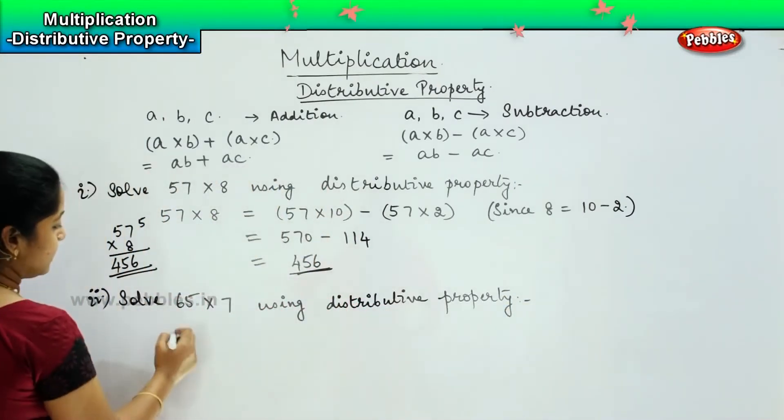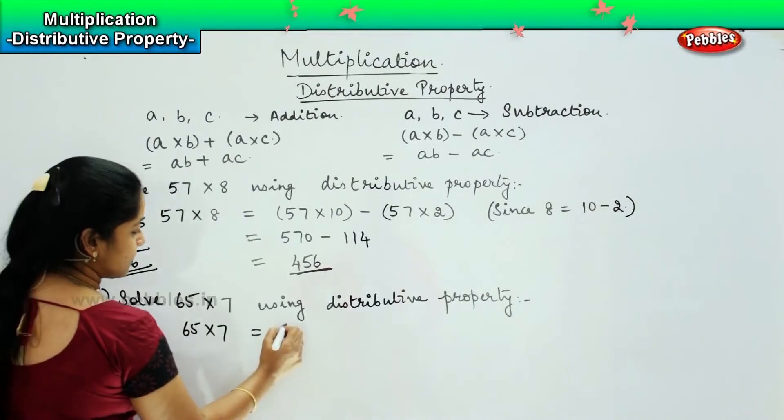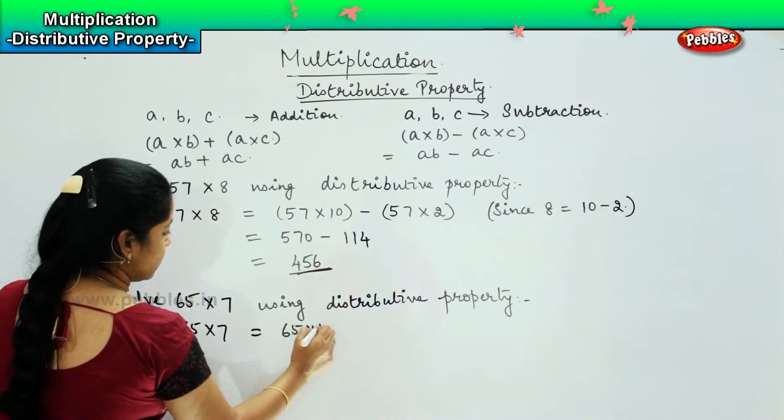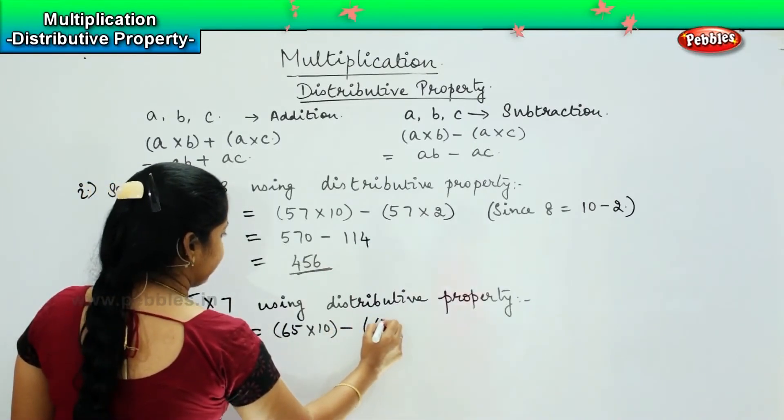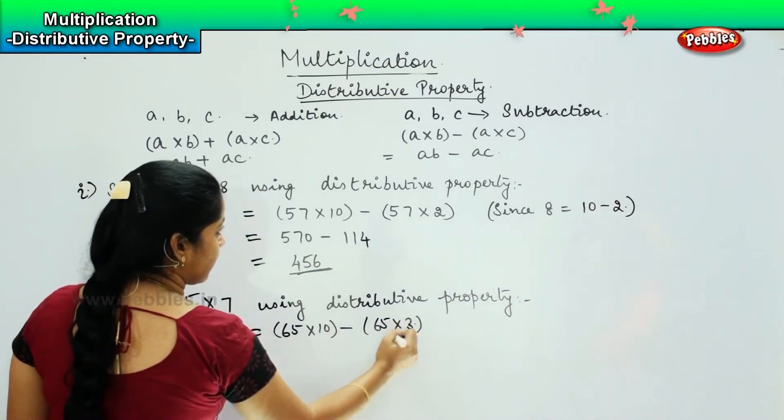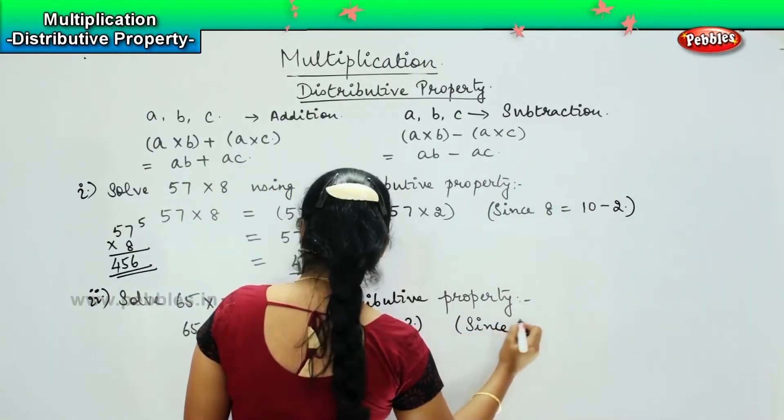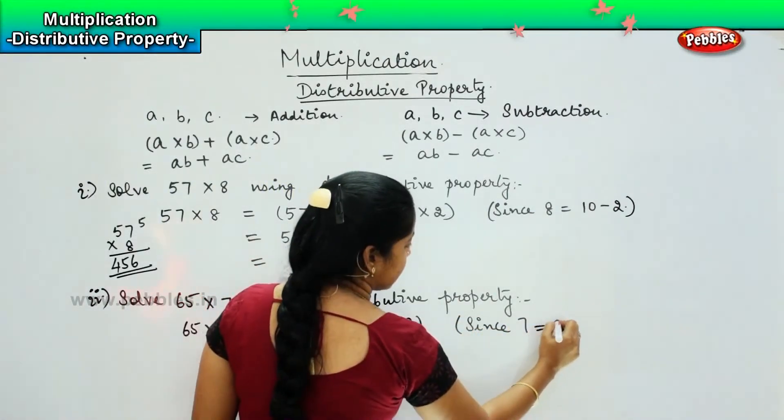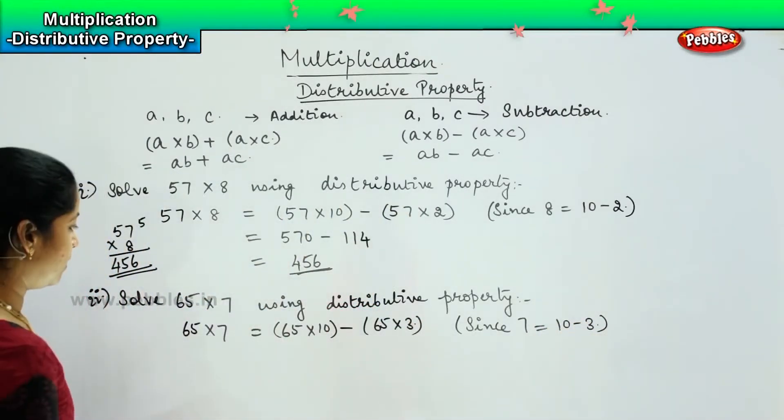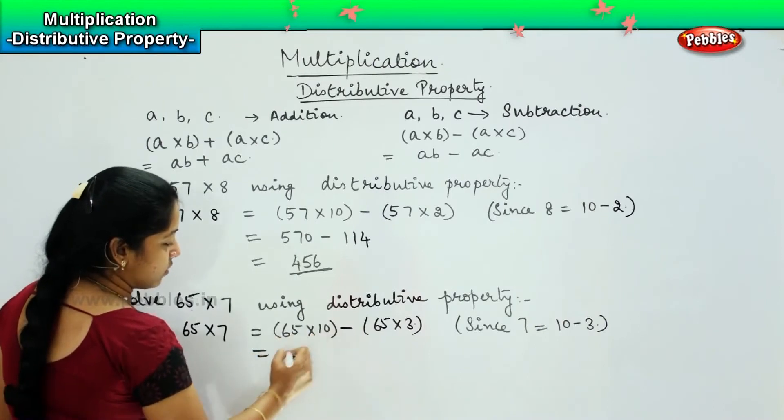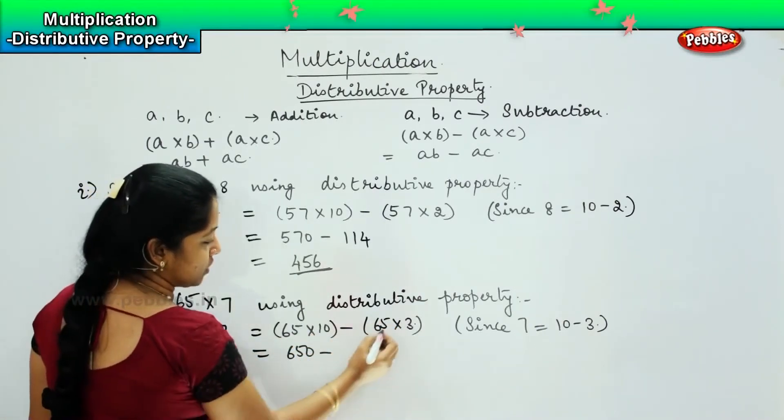So, now 65 into 7 can be written as 65 into 10 minus 65 into 3. The reason is because 7 can be written as 10 minus 3. So, now 65 into 10 becomes 650 minus 65 into 3.